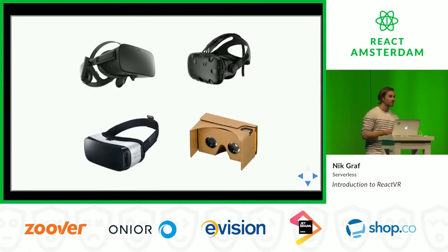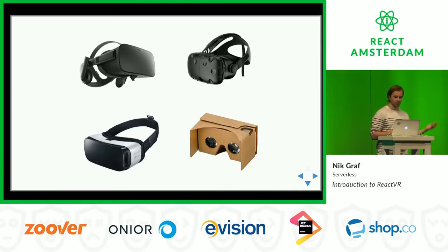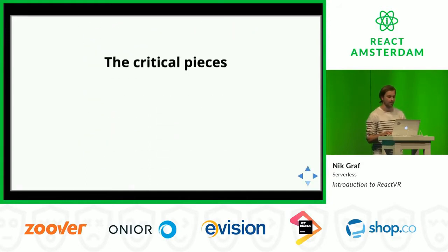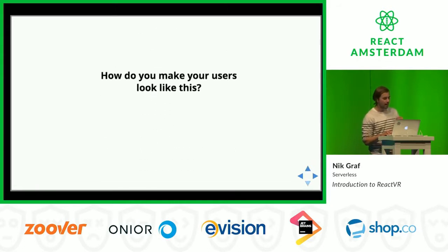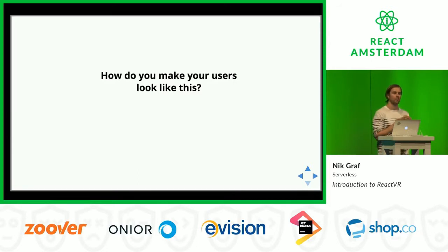So let's get started. First, to actually do VR we need a device. There are a couple of providers out there: Oculus, HTC Vive, Samsung Gear, Google Cardboard — all of them count as VR. The critical pieces are screen, head tracking, a head mount, and lenses, and these few pieces together make a completely different, immersive experience.